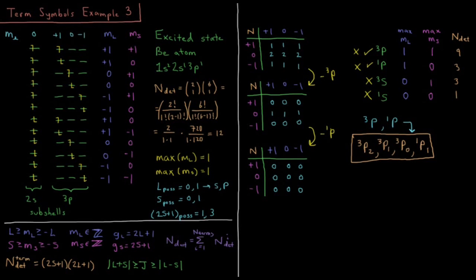This video will be a third example for how to compute the term symbols of an atom given a specific electron configuration. In this example we'll look at what to do in the case of having multiple partially filled subshells.